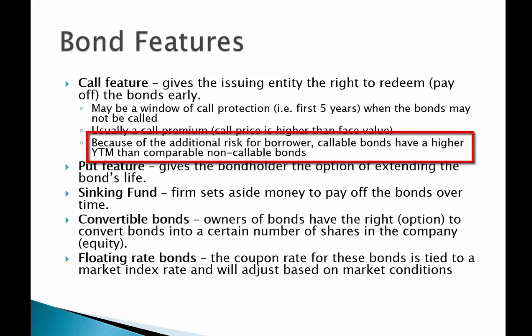Because of the additional risk to the investor — that the bond may be called away and they may not get the interest payments they were counting on — callable bonds have a higher yield to maturity. They pay a higher interest rate than comparable non-callable bonds. So if we have two otherwise identical bonds, one callable and one non-callable, the callable bond will have a higher interest rate and pay a higher yield to the investor.